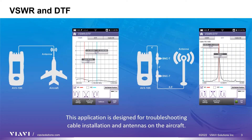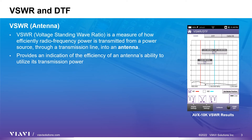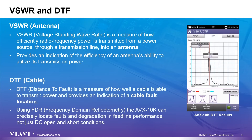Let's start with a basic overview of the differences between VSWR and DTF. Voltage standing wave ratio measures how efficiently an antenna utilizes the power fed to it, and DTF shows where a cable fault lies along the line from the AVX10K.